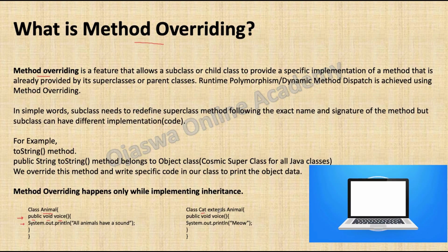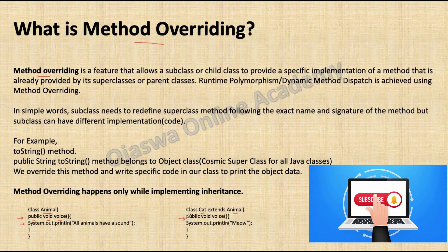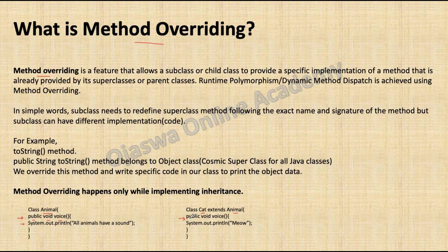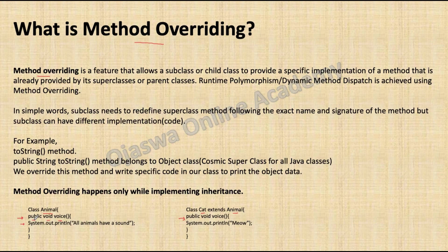There is a subclass cat that extends animal. Cat has overridden its superclass method voice. An important point: when a subclass overrides a superclass method, it has to follow the exact signature. While following the signature, there are a few points to remember. The first point is access modifier — you can increase the scope of the access modifier in the subclass, but you cannot decrease it.